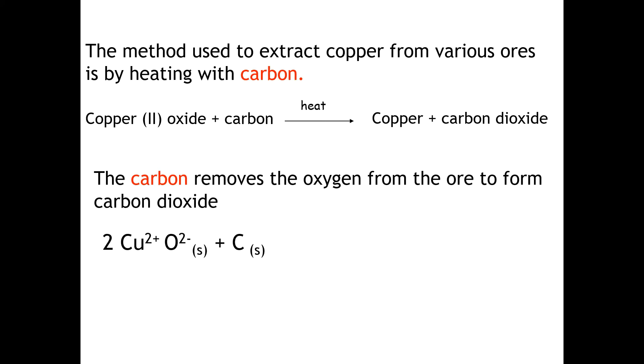The carbon removes the oxygen from the ore to form carbon dioxide. Here's the equation. If we have copper oxide, an ionic compound, the carbon will snatch off that oxygen atom. With a bit of heat, we'll end up with pure copper metal plus CO2. Again, this is an example of a reduction reaction. Those copper ions are gaining electrons to form copper metal.